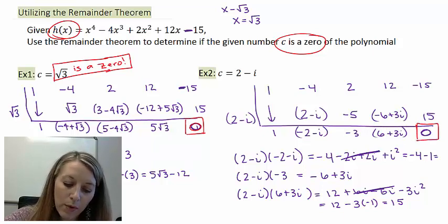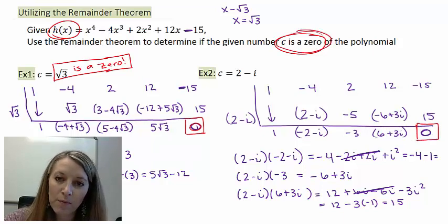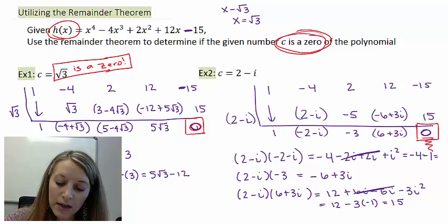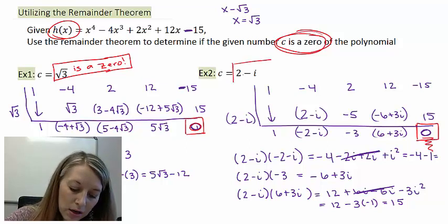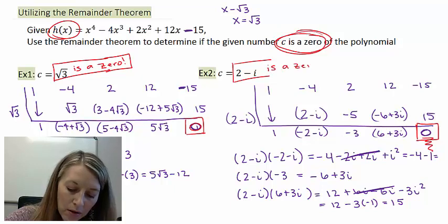And that's what we want. We wanted to figure out if this is a 0 of the polynomial. Of course, if we end up with a remainder of 0, it is. So my answer here is 2 - i is a 0 of the polynomial.